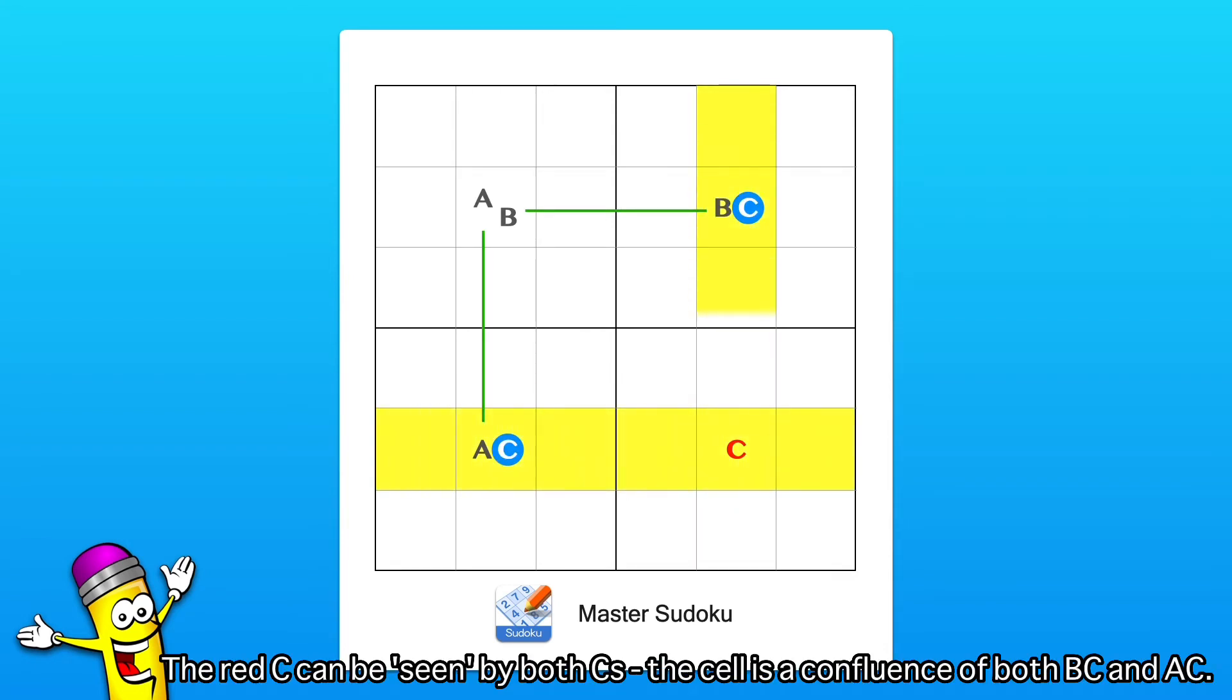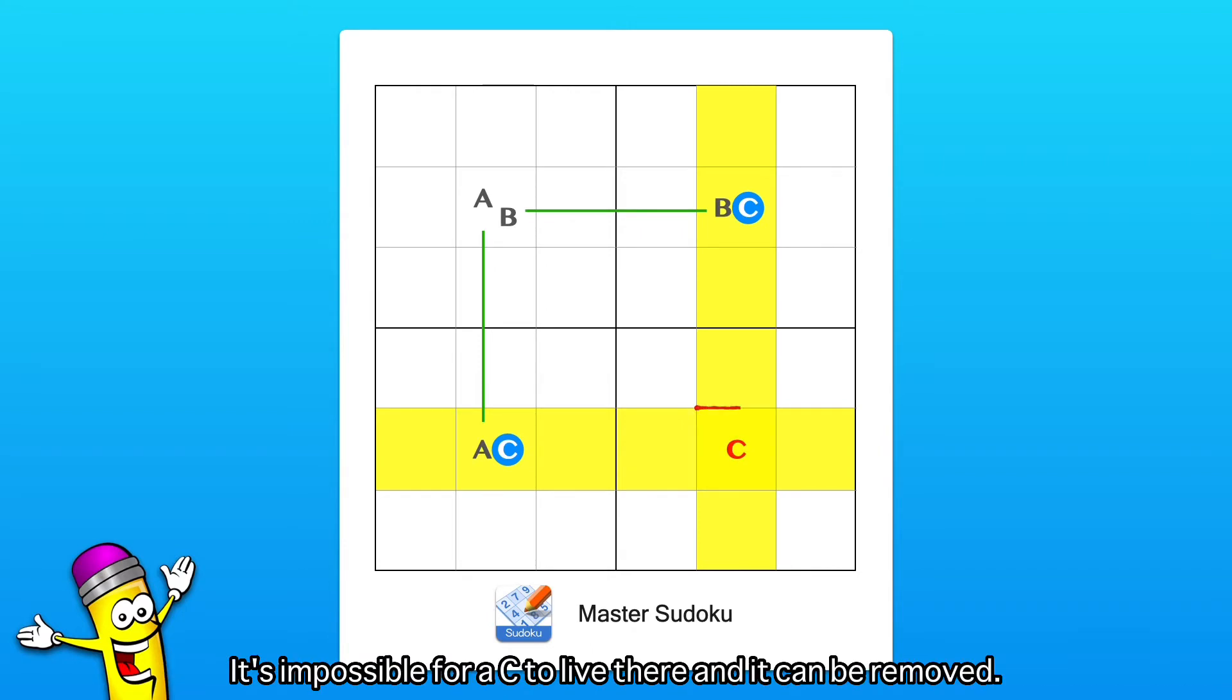The red C can be seen by both C's. The cell is a confluence of both B, C and A, C. It's impossible for a C to live there, and it can be removed.